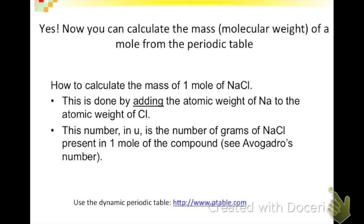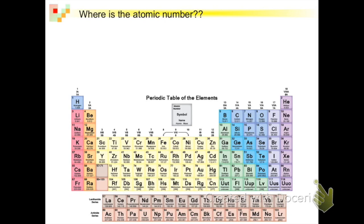Next we're going to look at the periodic table for the atomic masses of the components that make up sodium chloride. The best thing to do is to go to the periodic table. Where is the atomic number? First you have to make sure your periodic table has the numbers we need.